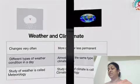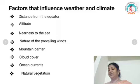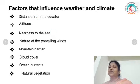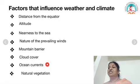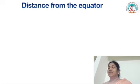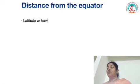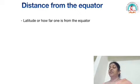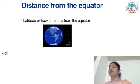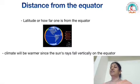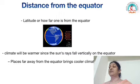There are many factors that influence weather and climate: distance from the equator, altitude, nearness to the sea, nature of the prevailing winds, mountain barriers, cloud cover, ocean currents, and natural vegetation. The most important climatic control is latitude — how far one is from the equator. If you live closer to the equator, the climate will be warmer since the sun's rays fall vertically on the equator. Places that are far away from the equator experience a cooler climate.